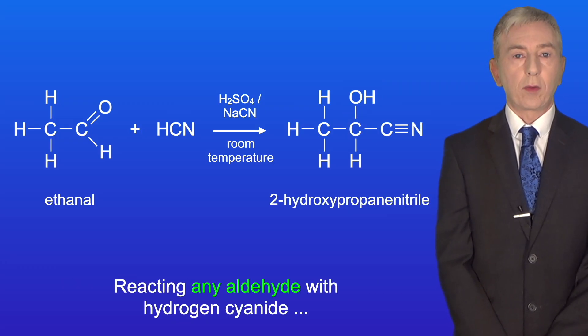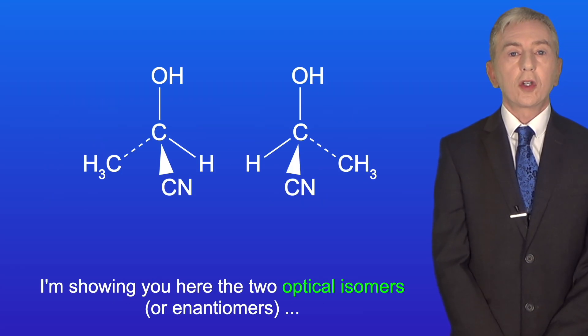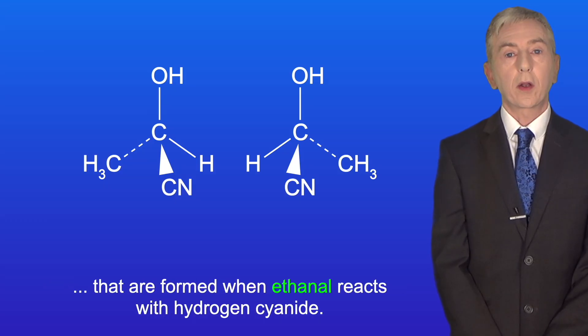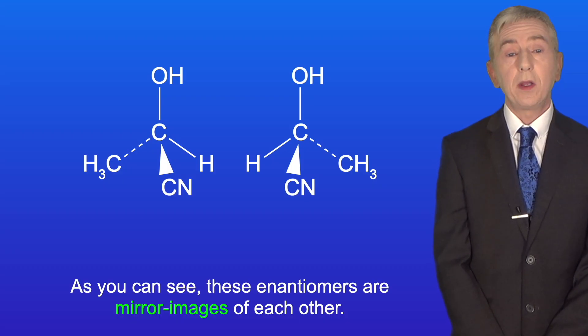Reacting any aldehyde with hydrogen cyanide will lead to optical isomerism. I'm showing you here the two optical isomers, or enantiomers, that are formed when ethanal reacts with hydrogen cyanide. As you can see, these enantiomers are mirror images of each other.